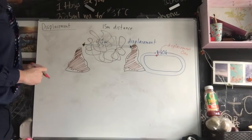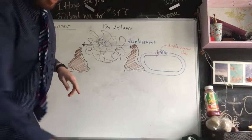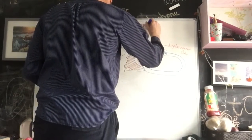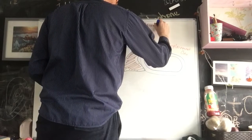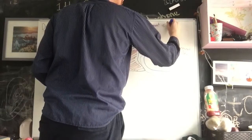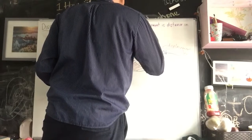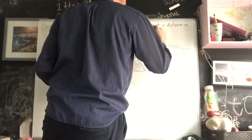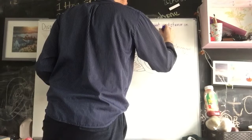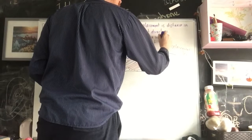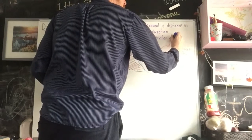So in terms of difference between displacement and distance, we say that displacement is distance in a set direction, and because of that it is a vector quantity.